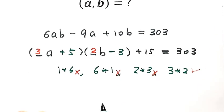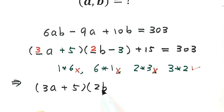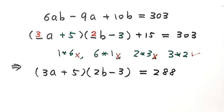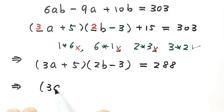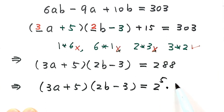Now let's simplify this equation. We get (3a plus 5) times (2b minus 3). Bringing 15 to the right-hand side gives us 288. Next, we prime factorize 288, which equals 2 to the power of 5 times 3 squared. So we have two different prime factors: 2 and 3.